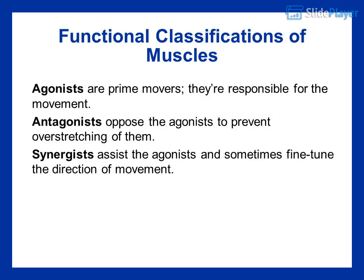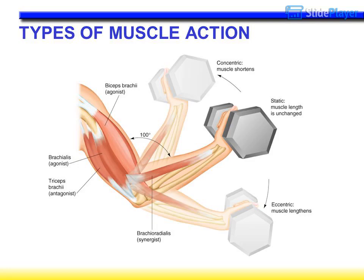Functional classifications of muscles: agonists are prime movers — they are responsible for the movement. Antagonists oppose the agonists to prevent overstretching of them. Synergists assist the agonists and sometimes fine-tune the direction of movement. Types of muscle action include concentric, static, and eccentric.